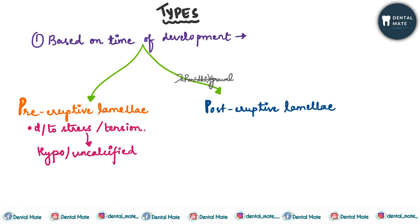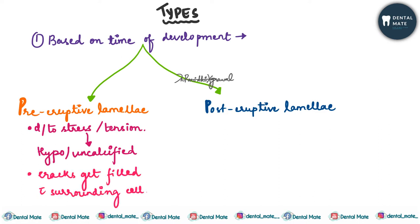In pre-eruptive lamellae, this is basically formed due to the stress or tension which is created during the enamel formation. When the rod crosses the regions of stress or tension, they may remain hypocalcified or uncalcified because of the degree of stress. The rods crossing these areas remain hypocalcified or uncalcified, and these uncalcified regions manifest as cracks. Sometimes these cracks can get filled with the surrounding cells.